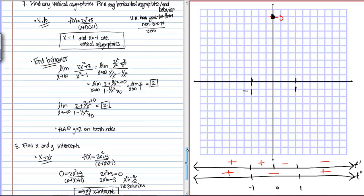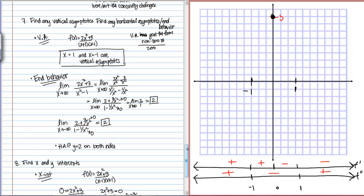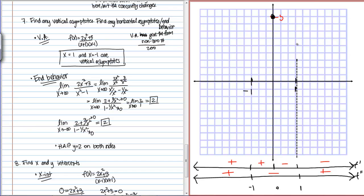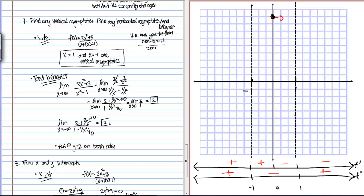Next, we have vertical asymptotes at x equals 1 and x equals negative 1. We can go ahead and draw those in, but that's just a start — we also need to know the actual limits on either side of each vertical asymptote. A vertical asymptote is defined where you take a limit towards a constant and you get either infinity or negative infinity. To figure out how this graph behaves we need to actually compute these limits.